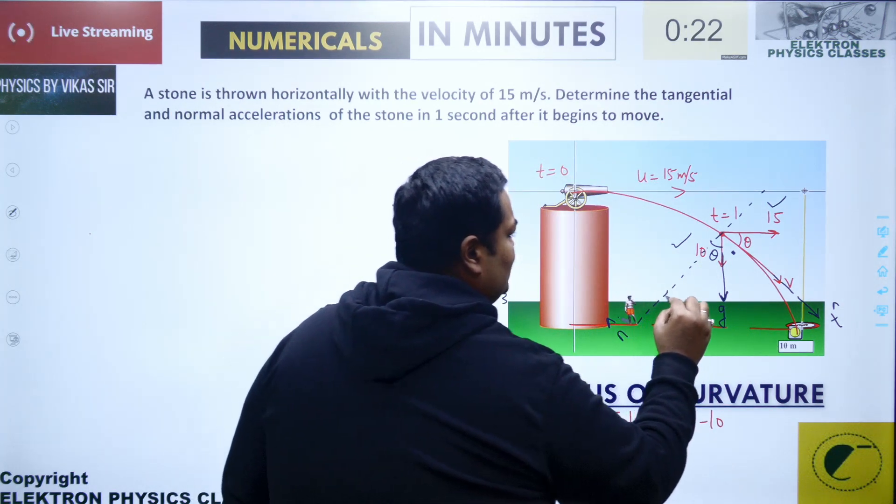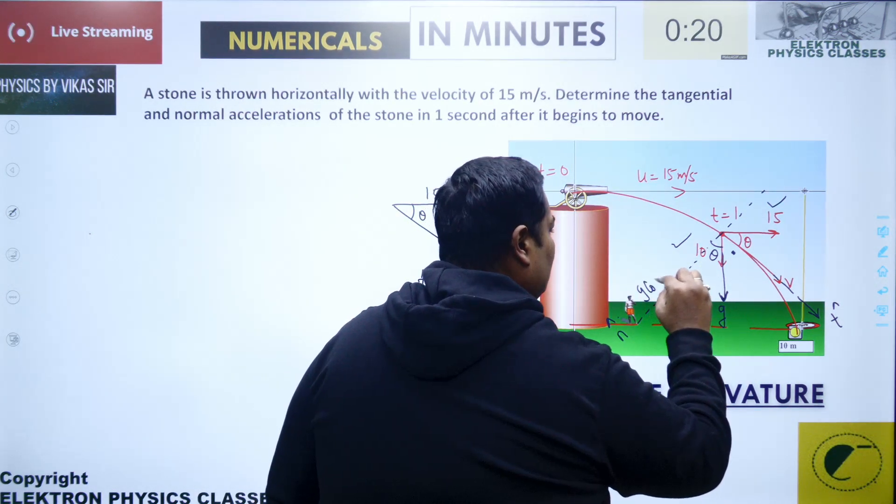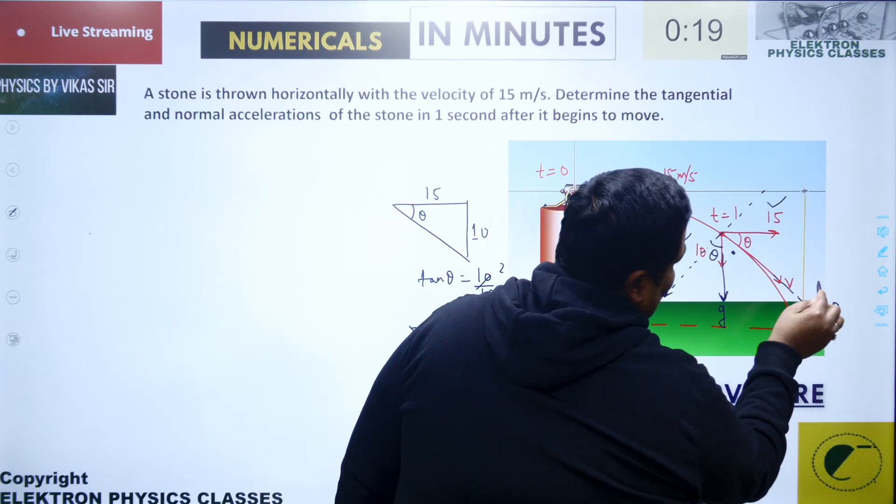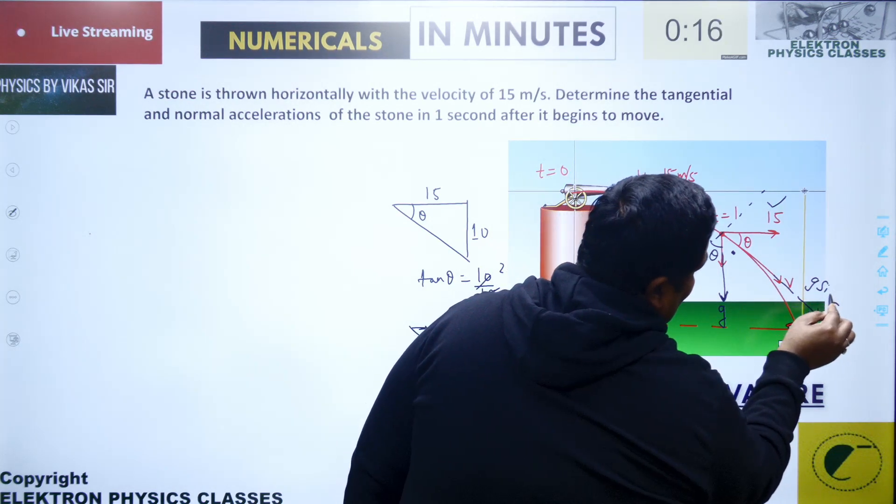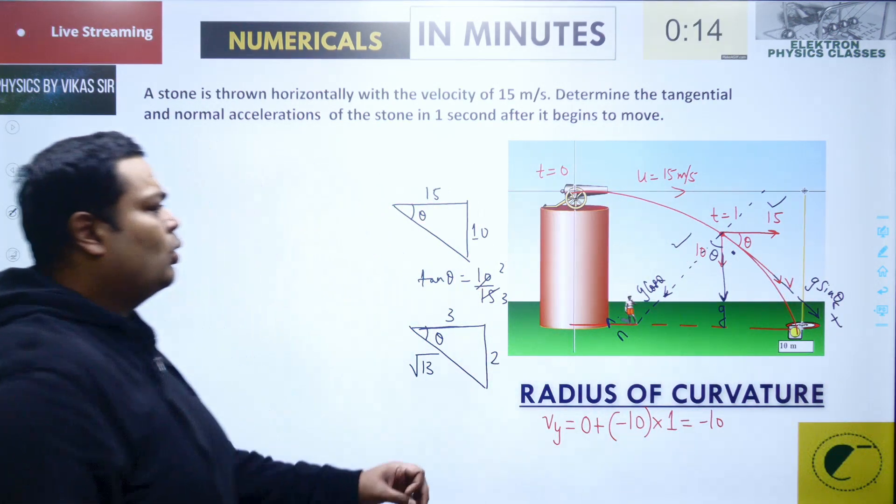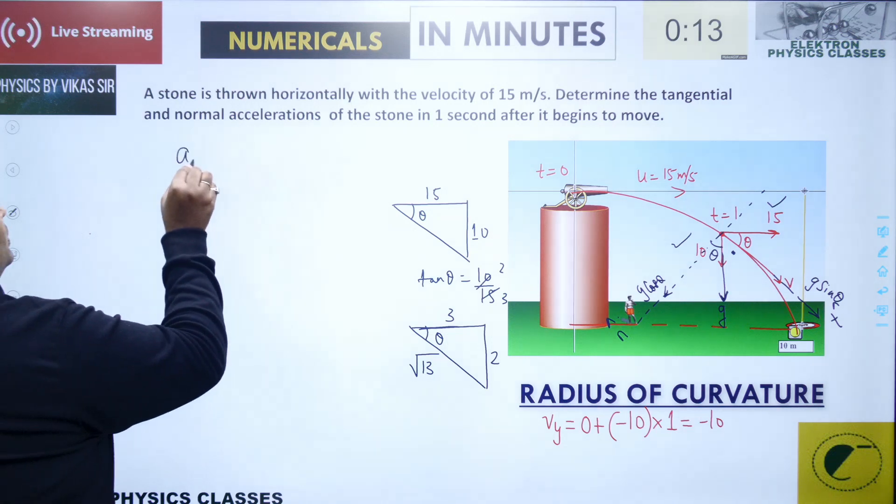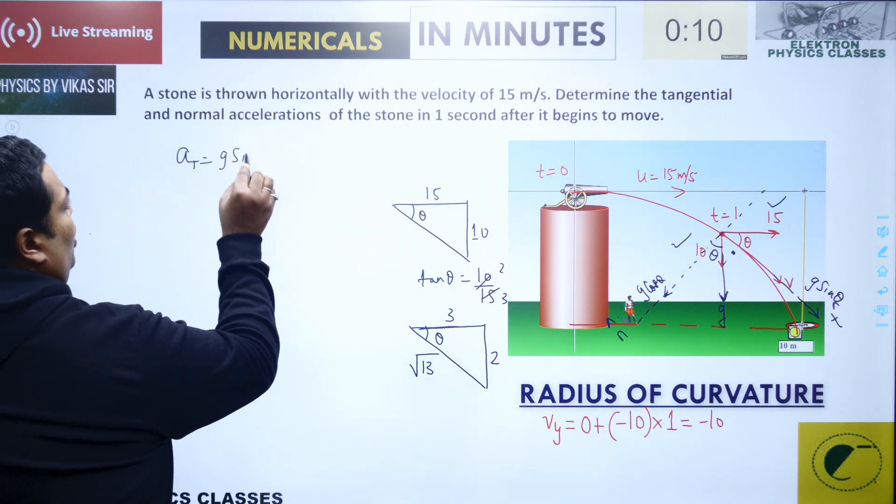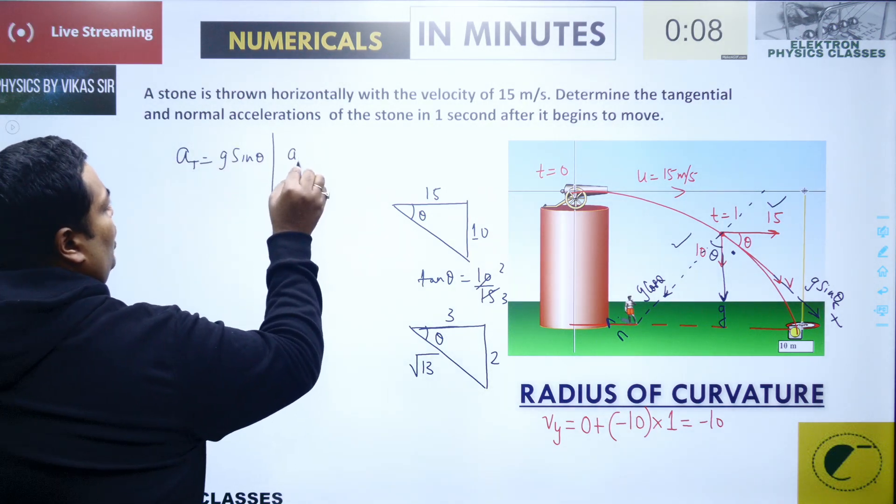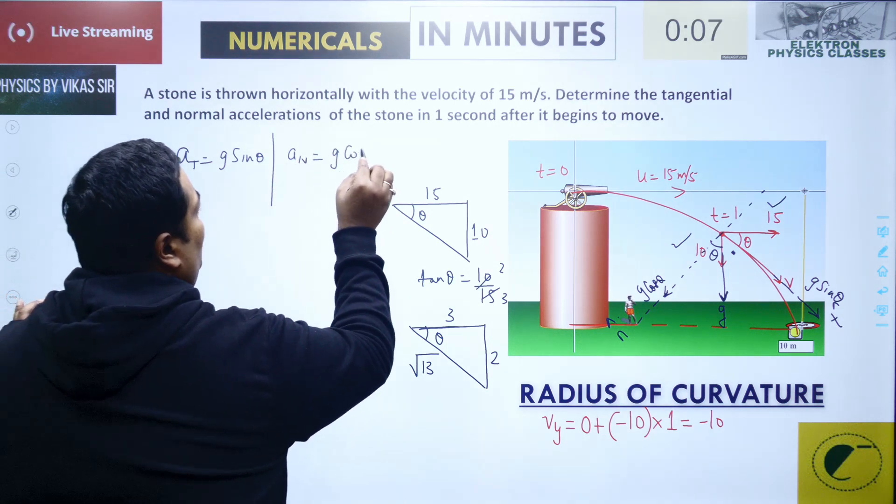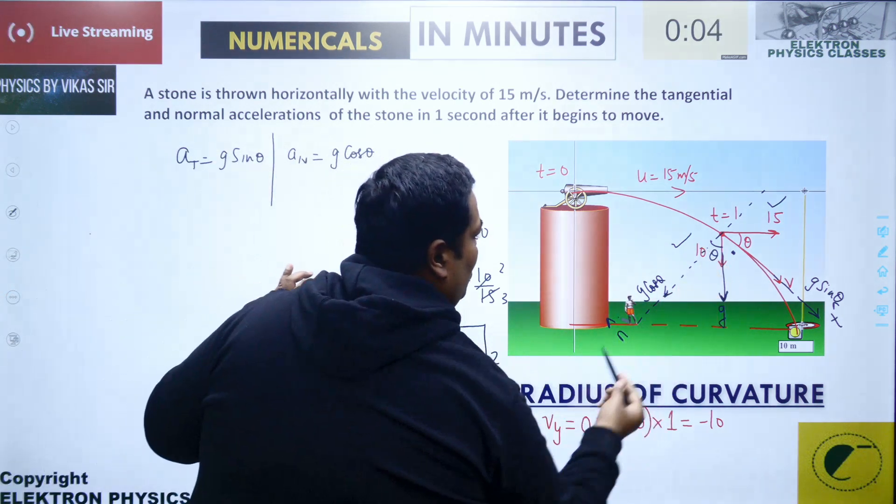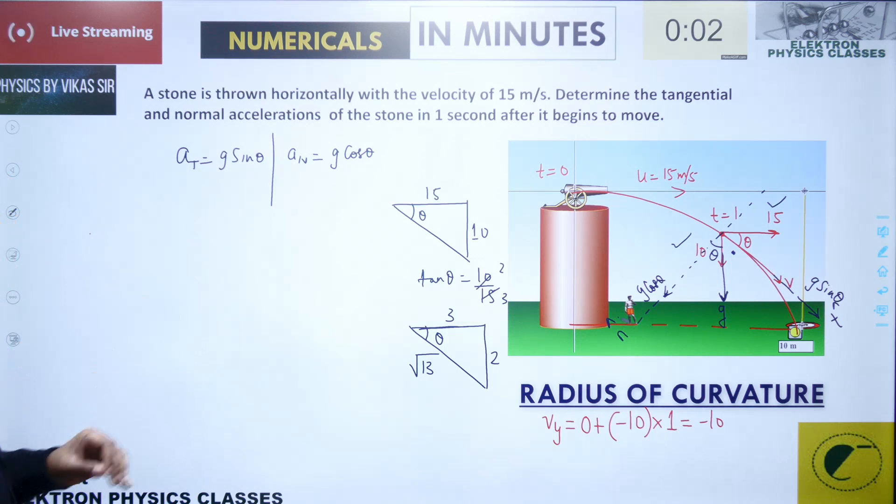So g's component here will be g cos theta, and on this side the component will be g sin theta. So along the tangent, the component becomes g sin theta, and along the normal, the component becomes g cos theta.